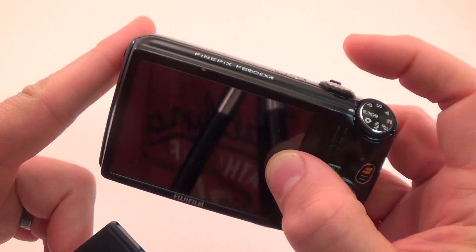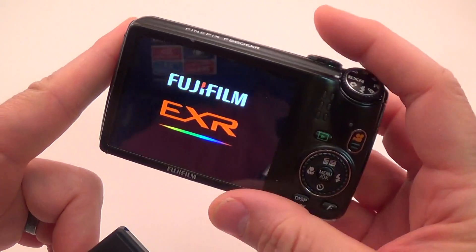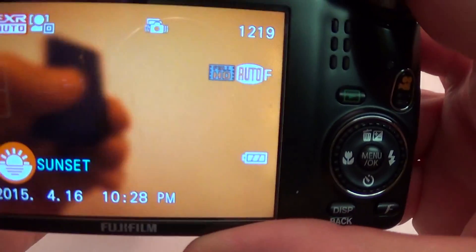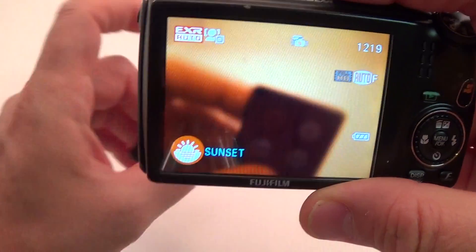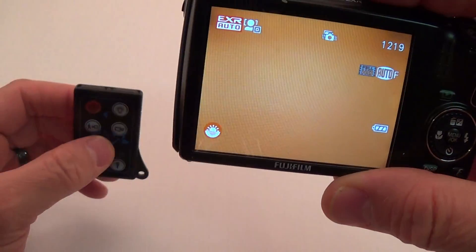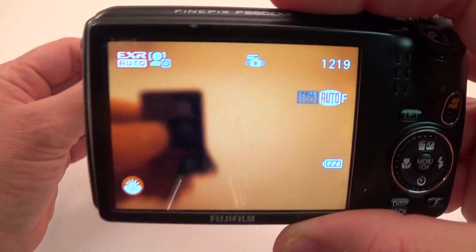So what you do is you go ahead and turn your camera on. This is just a Fujifilm and it's got an LCD screen on the back, so you need one of those to be able to see.